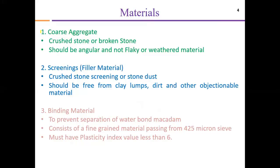The materials used in water-bound macadam roads are coarse aggregates, screening or filler material, and binding material. Coarse aggregate is stone or broken stone. It should be angular for proper interlocking, not flaky — because flaky material will not interlock properly — and not weathered, because weathered or rusted material can easily get wear and tear and will be disturbed easily.